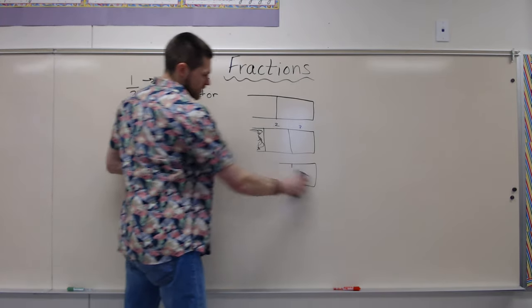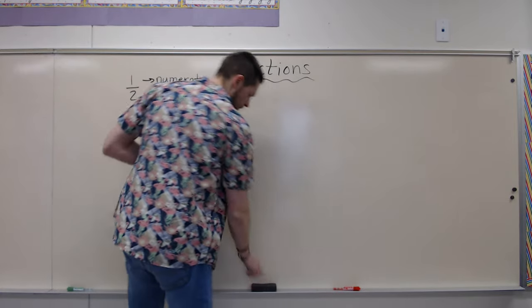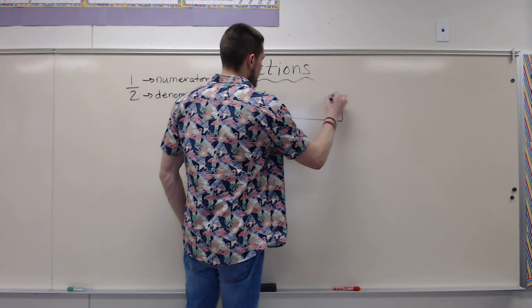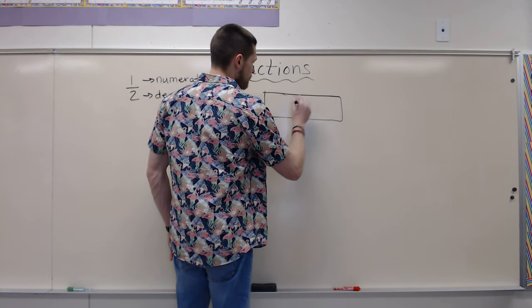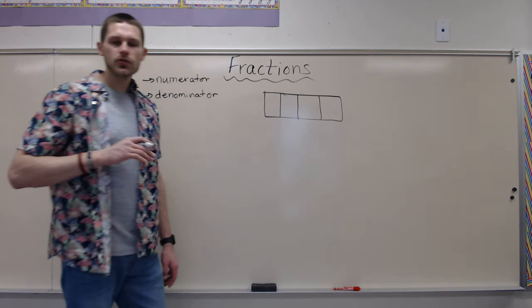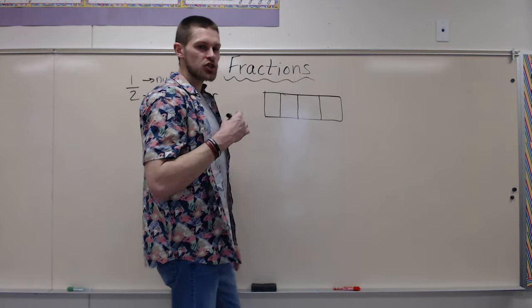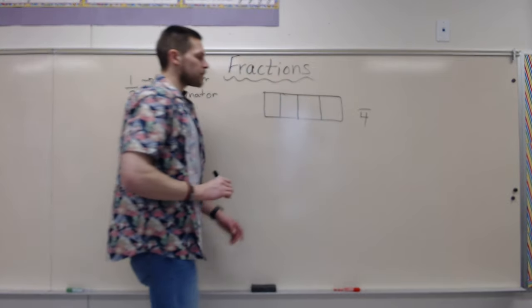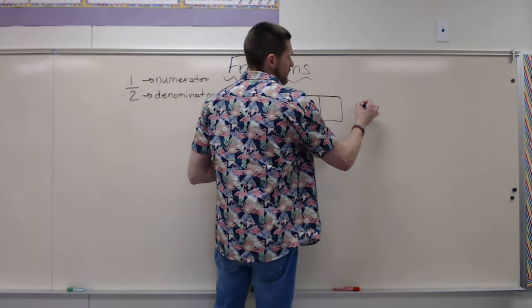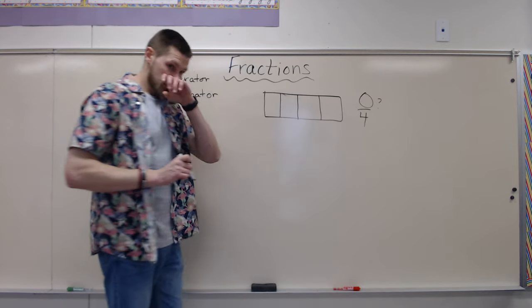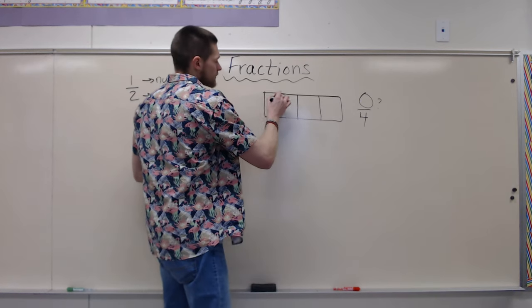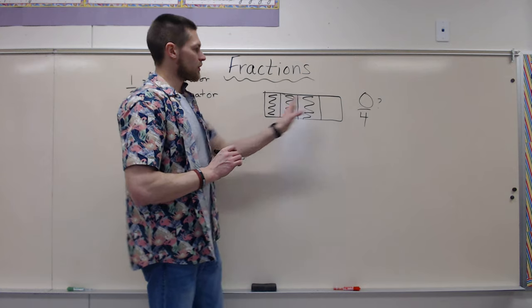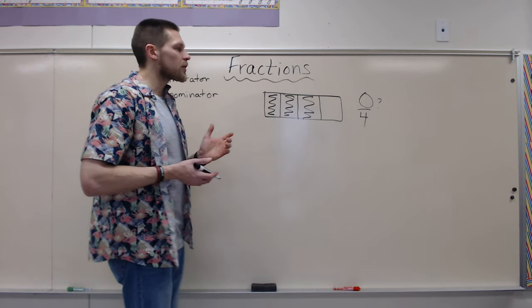Now I'm going to give you a couple to do on your own. Pause the video if you need to figure these out — if it helps, write it down on a piece of paper. I'm going to make our bar here and split it up into four equal pieces. I want you to tell me the shaded amount. There are four pieces, so your denominator is going to be four. Your top number — the numerator — is the question mark. That's what you're going to figure out based on how many boxes I have shaded in.